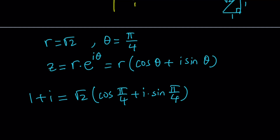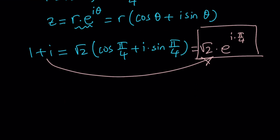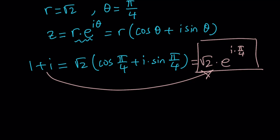So these two forms are identical. What we're going to do next is raise both sides to the power i. But first, let's use the compact Euler form. We can write 1 plus i as square root of 2 times e to the power i times pi over 4. It looks more complicated than 1 plus i because we need a radical, e, and i in the exponent — but raising it to the i-th power is going to be a lot easier in this form.